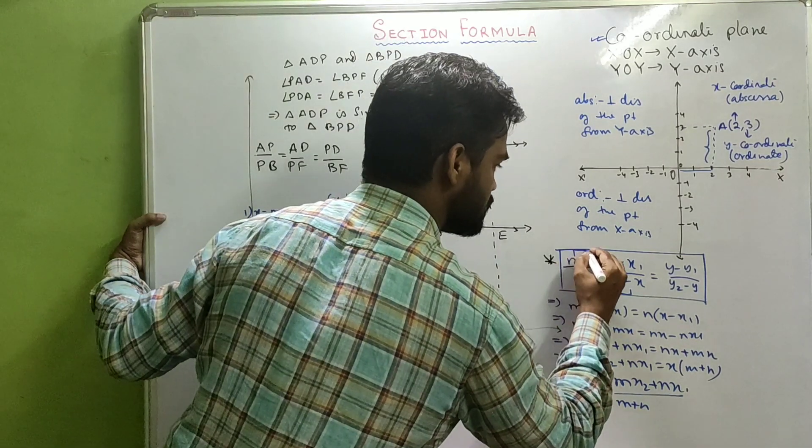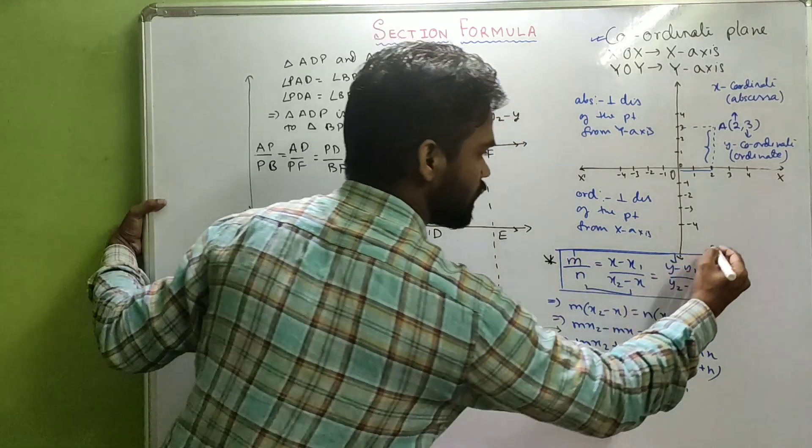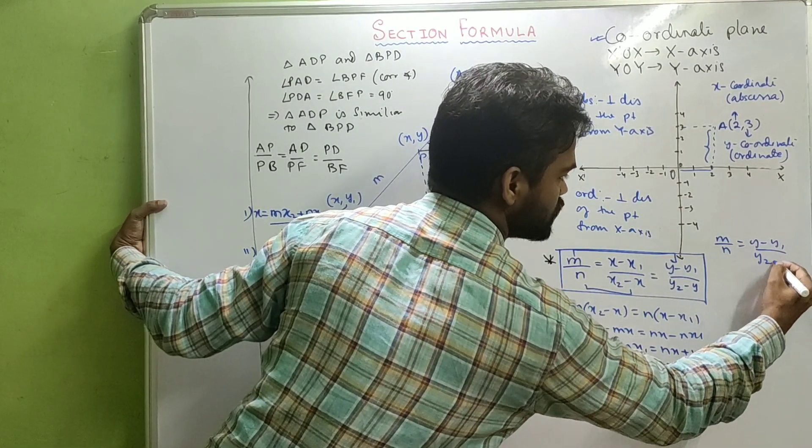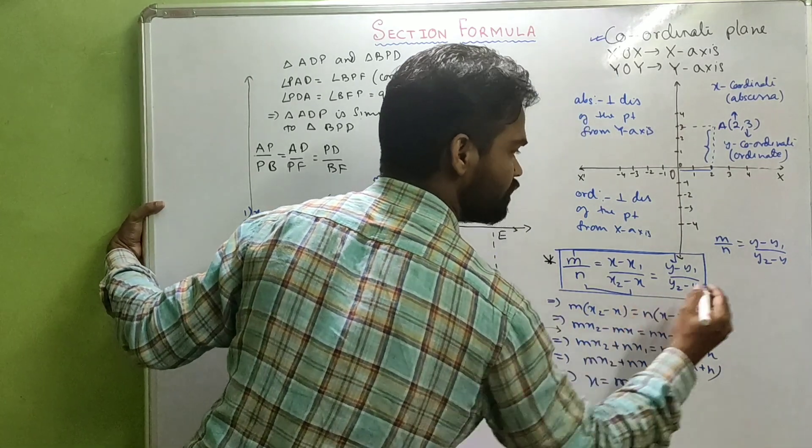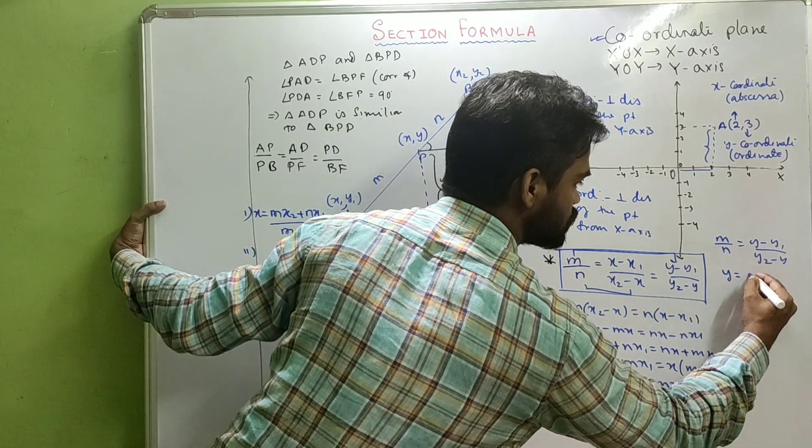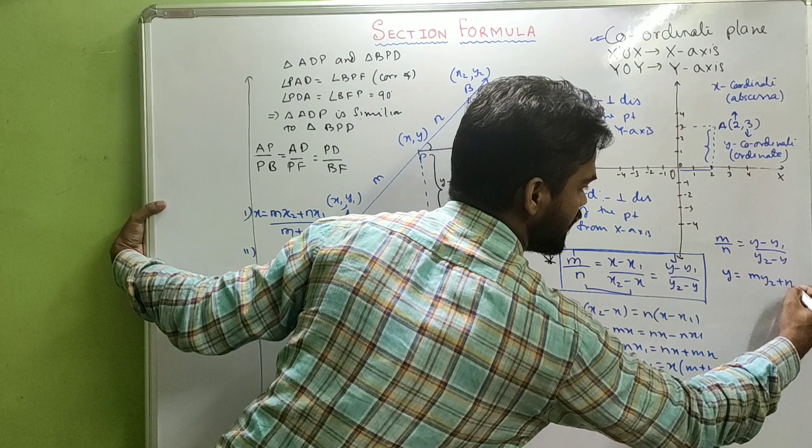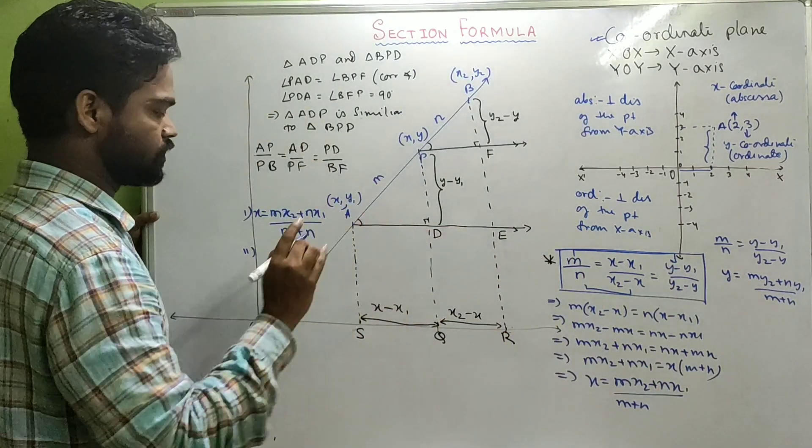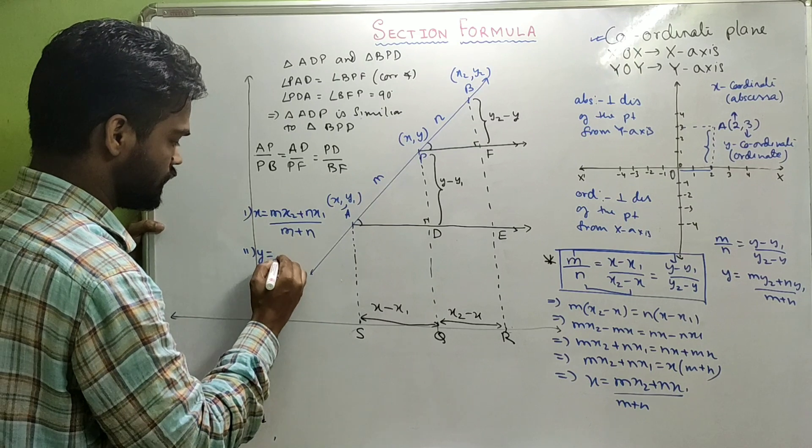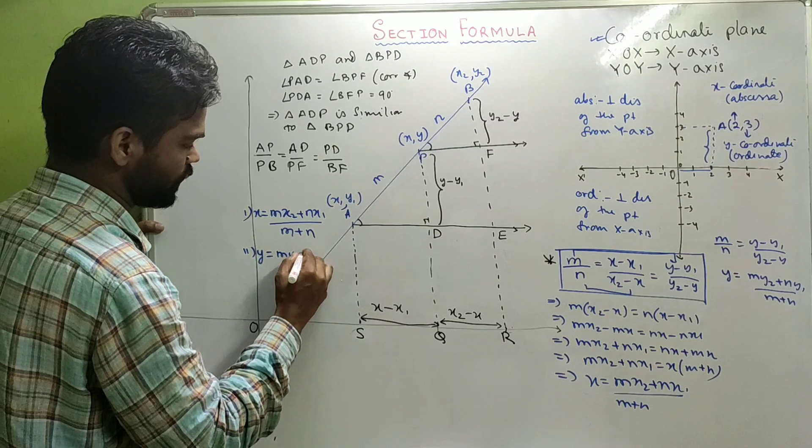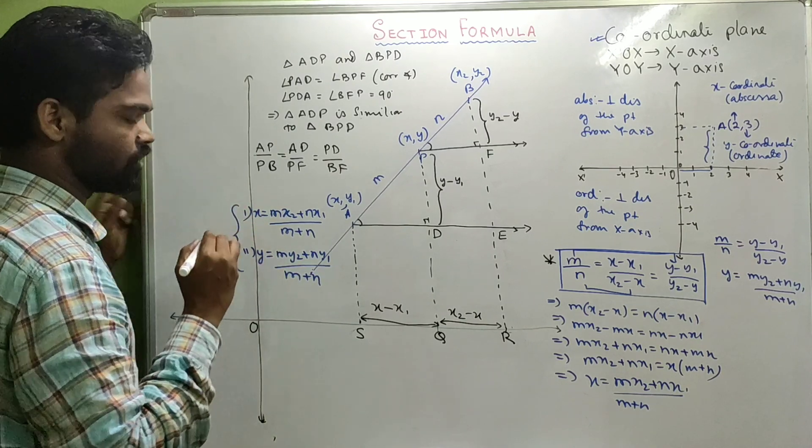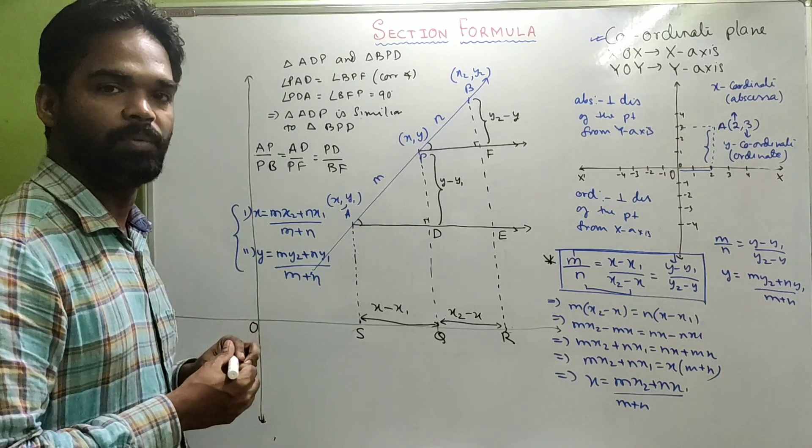And similarly, when we equate these two, that is M by N equals Y minus Y1 by Y2 minus Y, we'll get Y equals MY2 plus NY1 by M plus N. And this is your section formula.